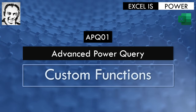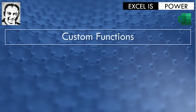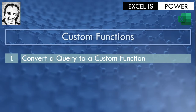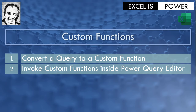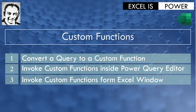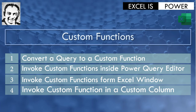With one condition: your data should be of the exact same layout. This video will be divided into four sections. First, how to convert a query to a custom function. Second, how to invoke custom functions inside the Power Query editor. Third, how to invoke custom functions from the Excel window itself. And finally, how we can invoke the custom function in a custom column.